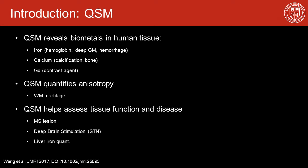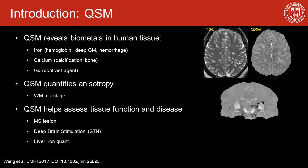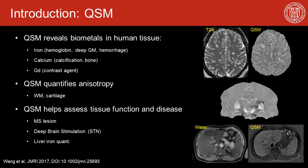It can also quantify anisotropic structures such as the neural bundle in white matter or the cartilage. So it is very helpful to assess tissue function and disease, such as characterizing MS lesions, localizing the STN nuclei for deep brain stimulation, and quantifying the iron deposit in the human liver.